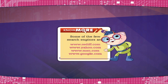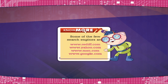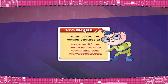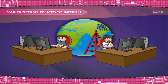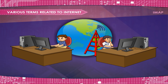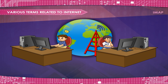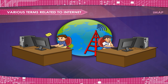Some of the few search engines are www.rediff.com, www.yahoo.com, www.msn.com, and www.google.com. IMAP — The Internet Message Access Protocol. IMAP is an internet standard protocol used by email clients to retrieve email messages from a mail server over a TCP/IP connection.